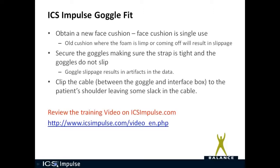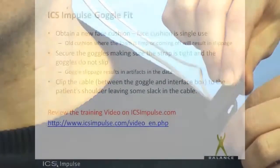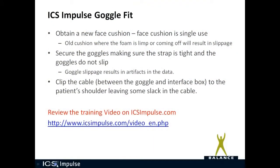Let's talk about goggle fit. When you get ready to place the goggles on the patient, you need to make sure you obtain a new face cushion — it is single use only. If you've reused the face cushion and it looks limp or the foam is not adhering to the plastic insert, this will result in slippage. You need to make sure the strap is tight and the goggles do not slip, as goggle slippage results in artifacts in the data. Also clip the cable from the goggles to the interface box onto the patient's shoulder or collar, because pulling on an unclipped cable can cause goggle movement and slippage.